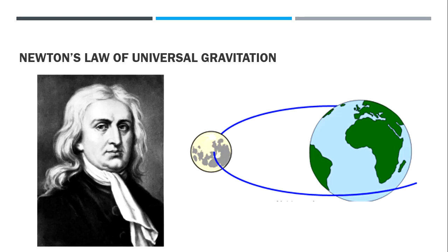It's Sir Isaac Newton, after whom the unit of force is named, who researched gravity in the 1600s. He believed that every object in the universe was pulling on every other object. This theory is called Newton's Law of Universal Gravitation. Newton said that gravity depends on two things: the masses of the objects and the distance between them.